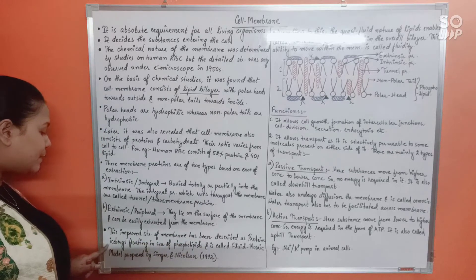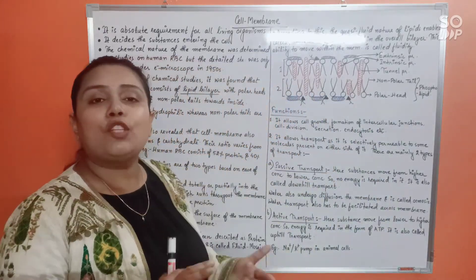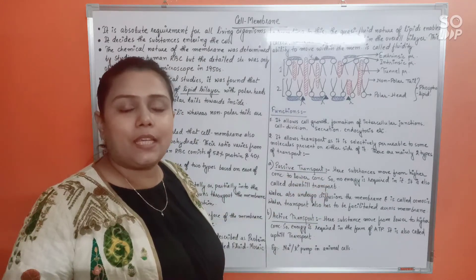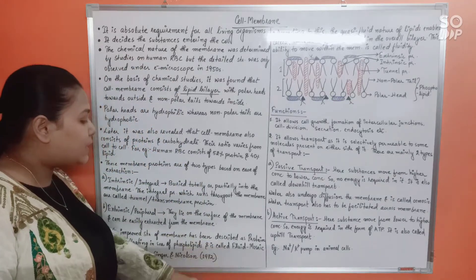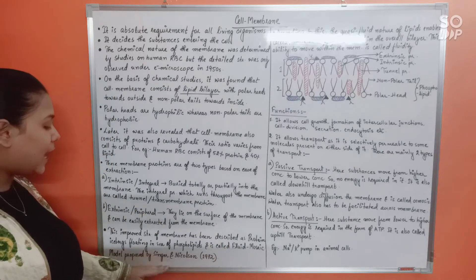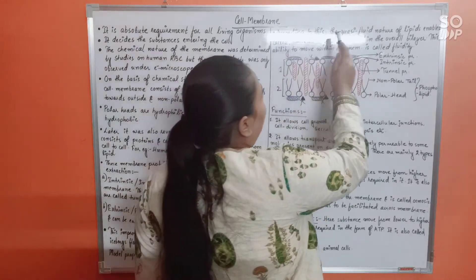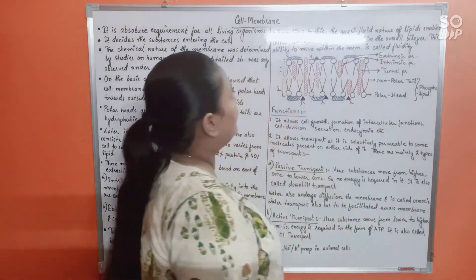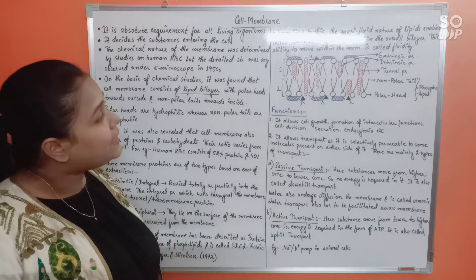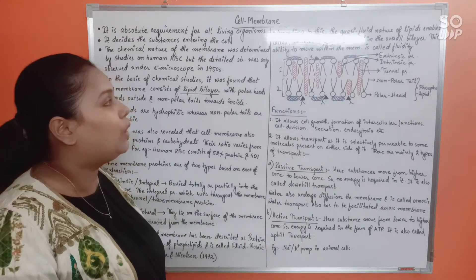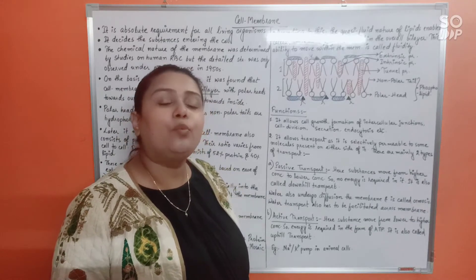This model is known as the fluid mosaic model, proposed by Singer and Nicholson in 1972. According to this model, the quasi-fluid nature of lipids enables lateral movement of proteins within the overall bilayer. This ability of proteins to move within the bilayer is called fluidity, which is why the model is called the fluid mosaic model.